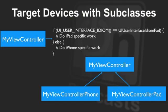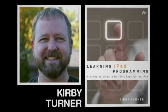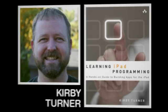A better approach is to subclass your view controller to device-specific versions. Using the root view controller as an example, you would create a base class root view controller. Your shared, device-independent code would go inside that base class. You would then derive two additional view controllers: root view controller underscore iPad and root view controller underscore iPhone. Within those derived classes, you would include device-specific code. This will help you eliminate the user interface idiom checks throughout your code.